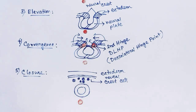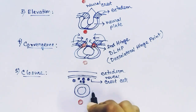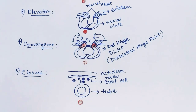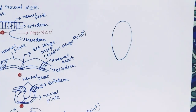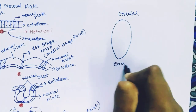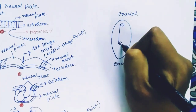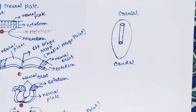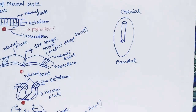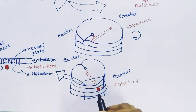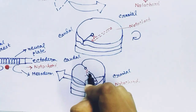The neural tube formation is now complete. The neural crest cells will form the peripheral nervous system and contribute to other nervous systems. If we look at the organism with the cranial side and caudal side, the neural tube has formed along it. If we see it in the trilaminar disc, it will look like this — the neural tube formed within.